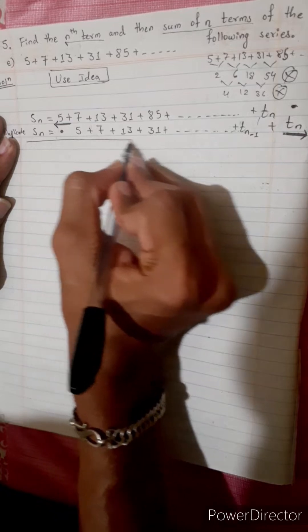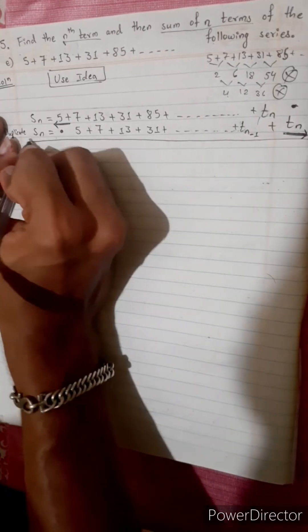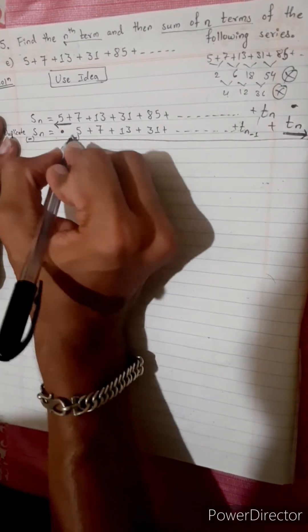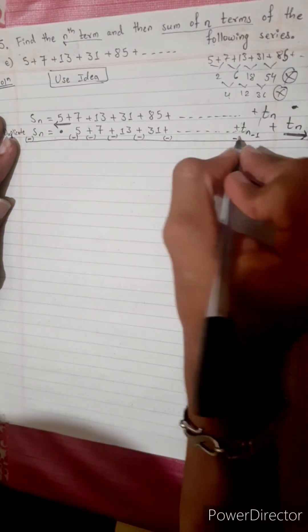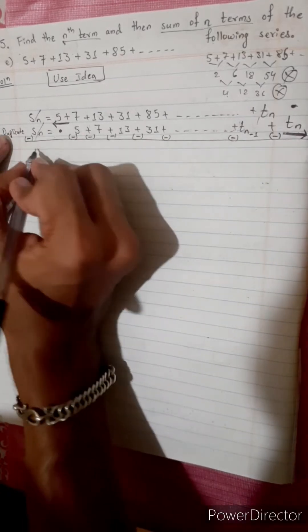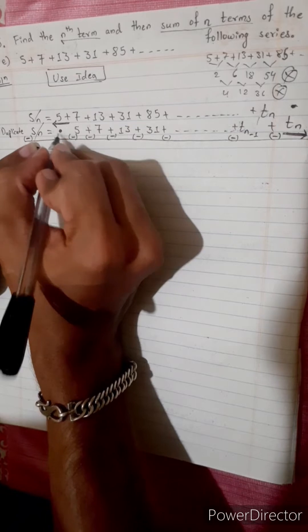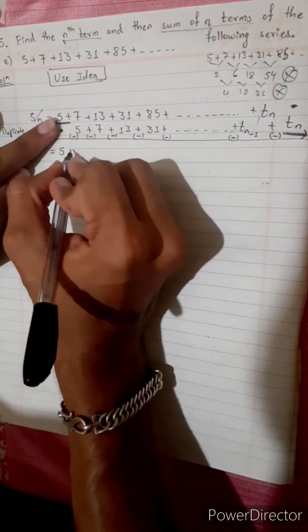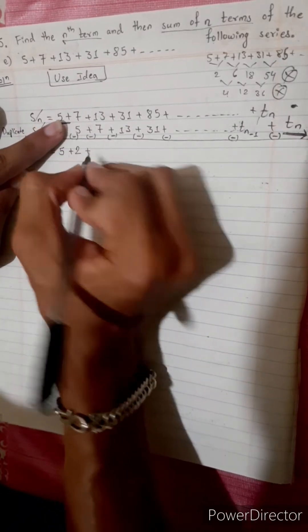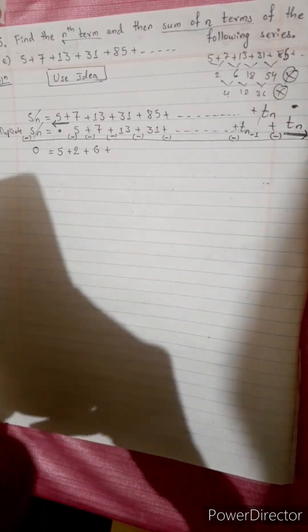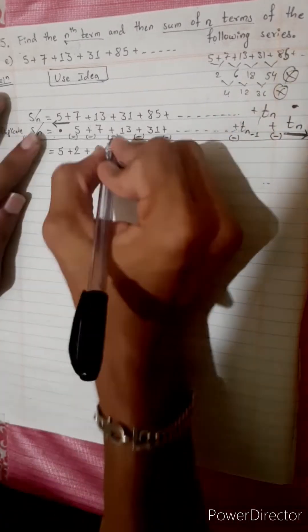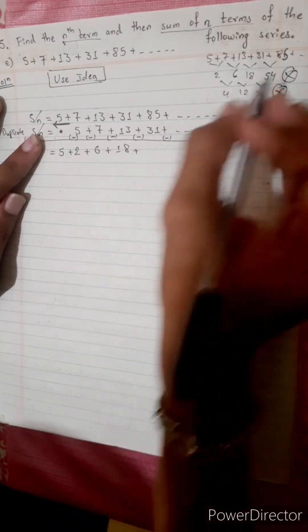Now we subtract all terms. Sn minus Sn. We subtract term by term: 7 minus 5 equals 2, 13 minus 7 equals 6, 31 minus 13 equals 18, 85 minus 31 equals 54.